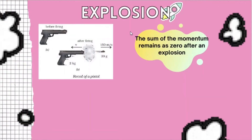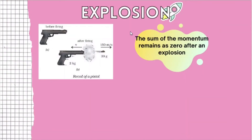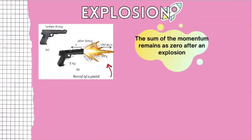Let's talk about an explosion. An explosion is when the system is stationary at first, and then the explosion happens where two objects in the system move in opposite directions. For example, let's imagine we are firing a gun. At first, the gun and bullet are stationary. After we pull the trigger, the bullet moves forward at a certain velocity and the gun recoils backwards. That is what we call an explosion in physics.